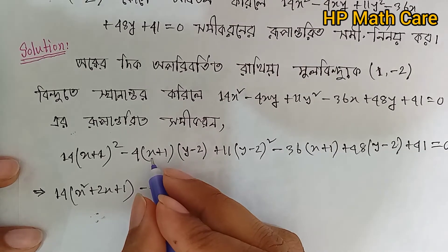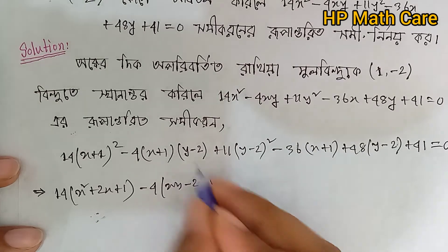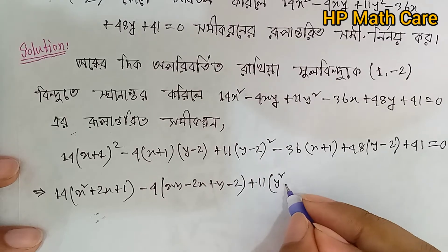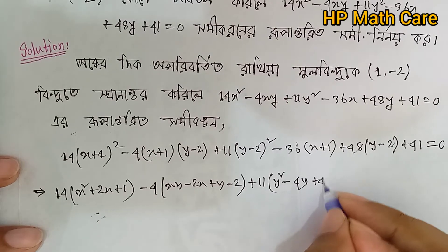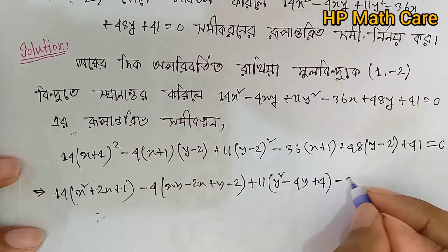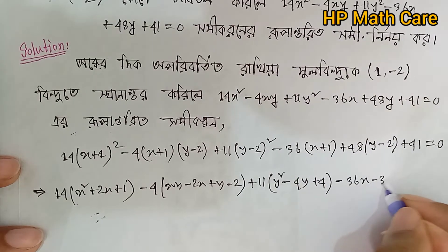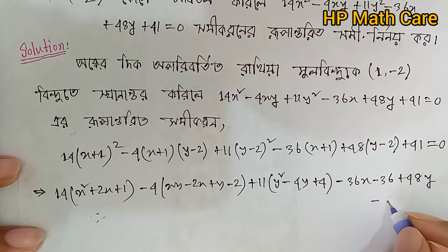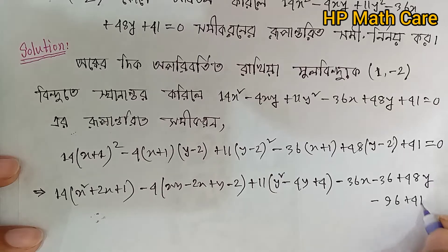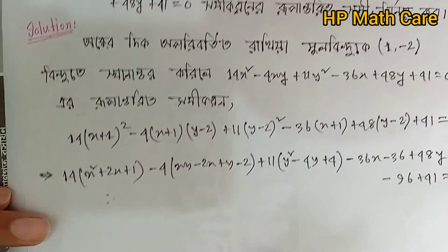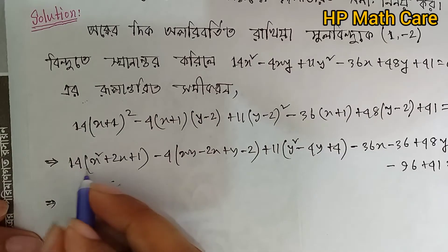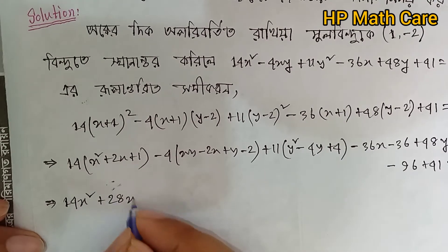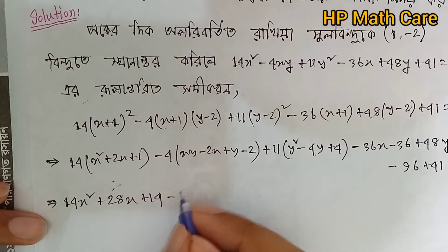x plus 2, squared, plus 11 into — let's expand: a squared minus 2ab plus b squared. You say minus: 36x minus 36, again a F. Equal to: two plus 48y minus 96 plus 41 equal zero. Now we get 40x squared plus 28x...